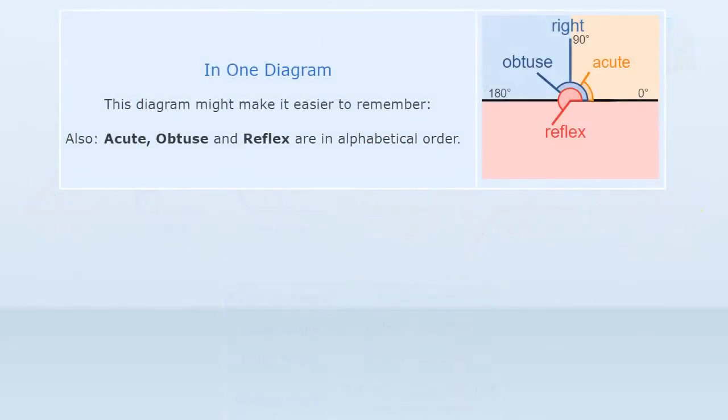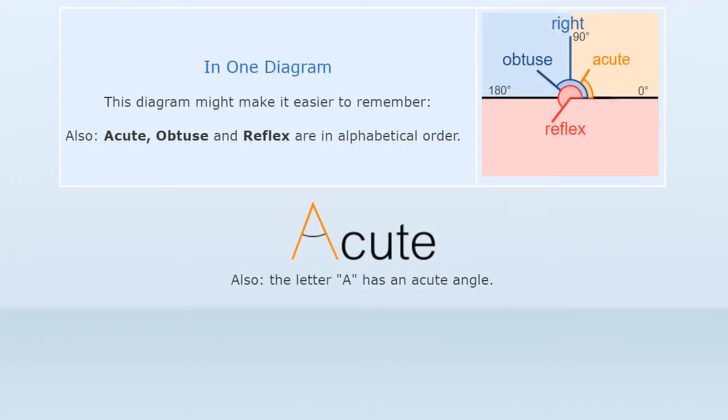This diagram might make it easier to remember. Also, acute, obtuse, and reflex are in alphabetical order, and the letter A has an acute angle.